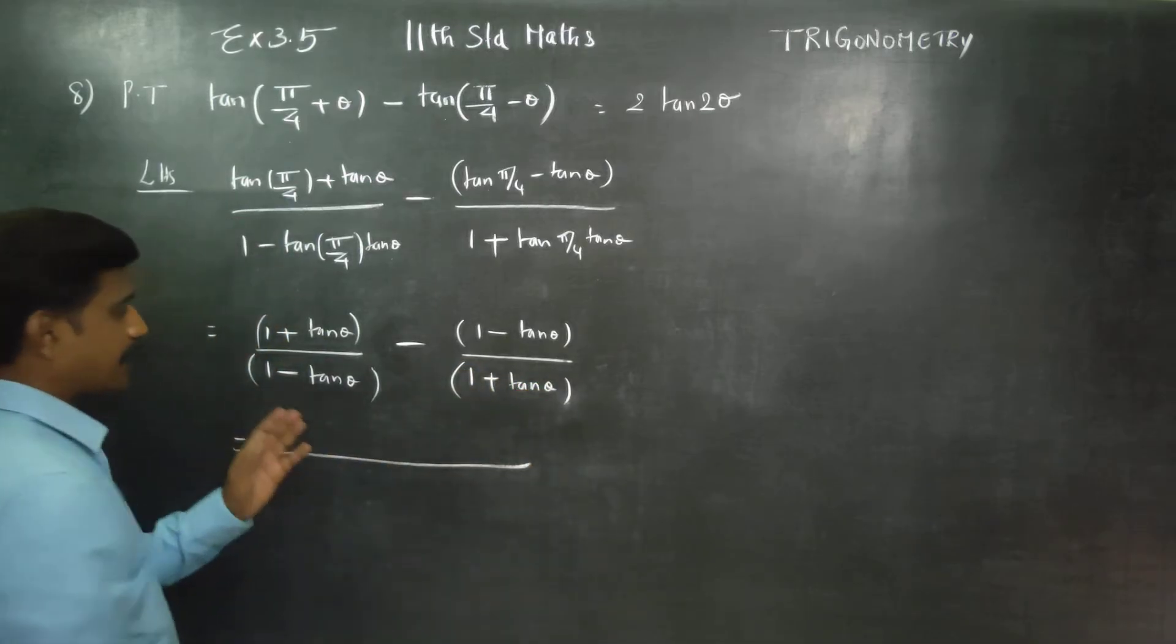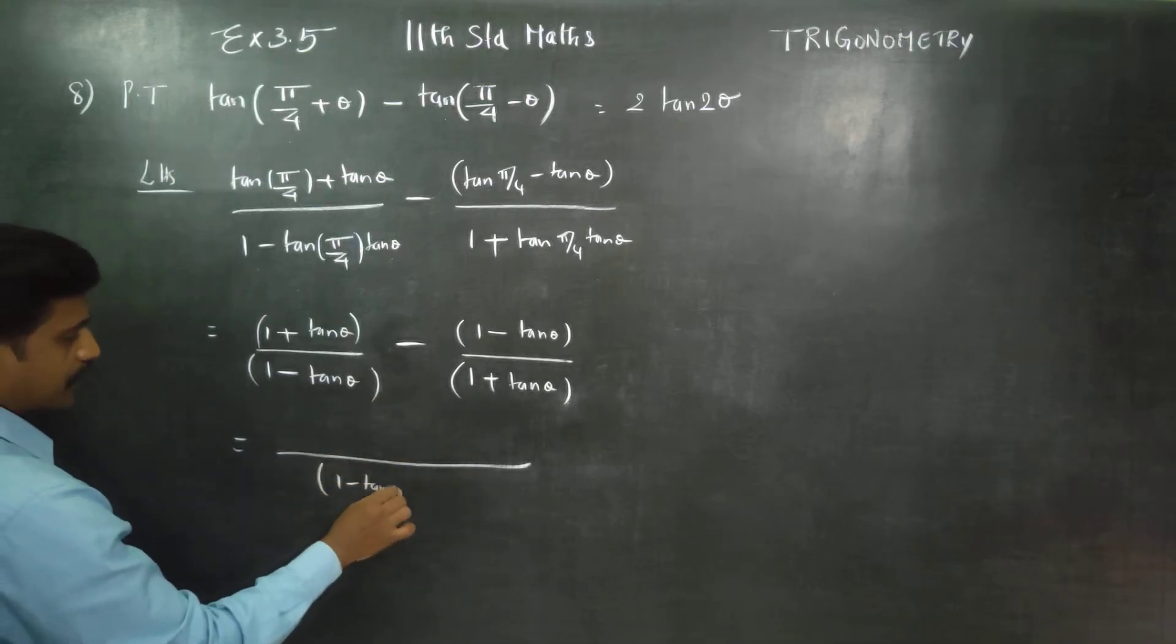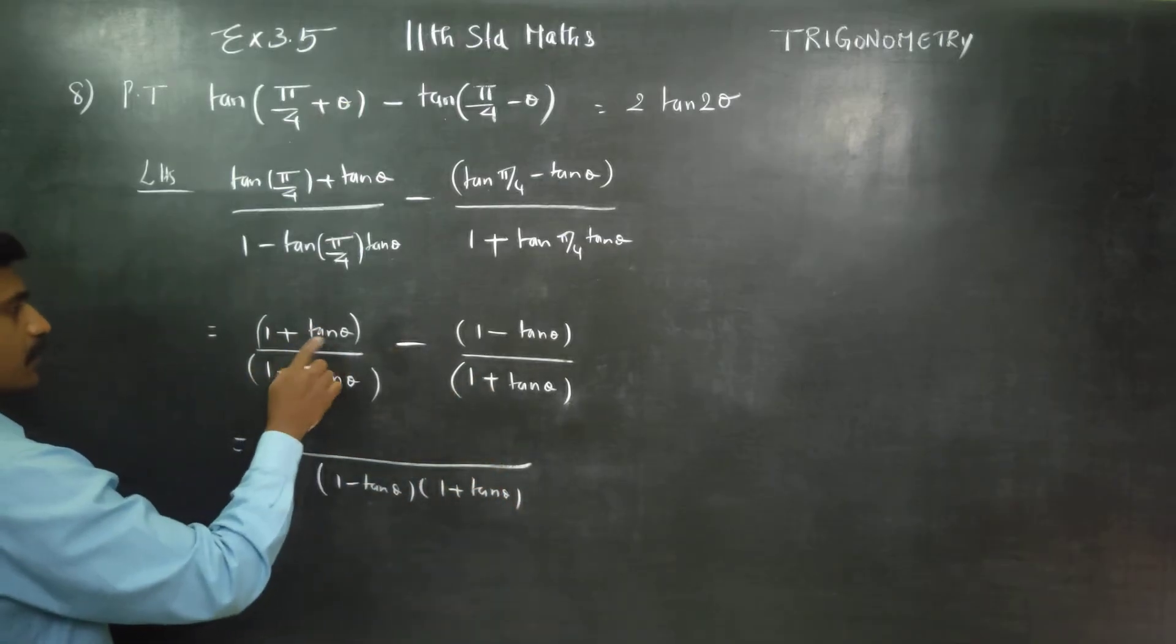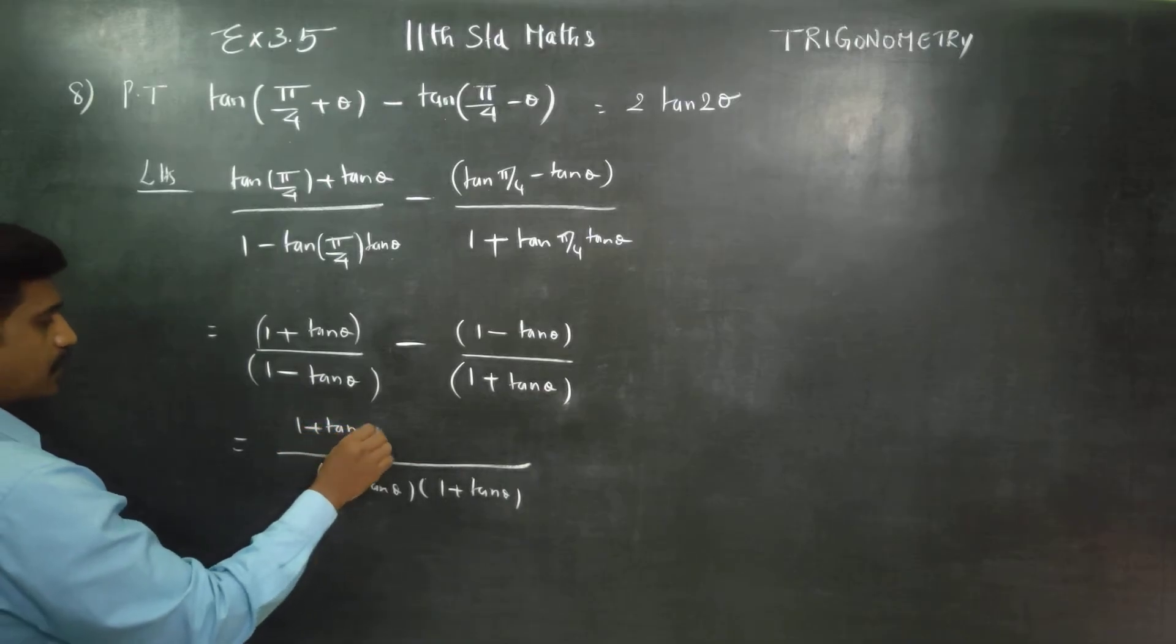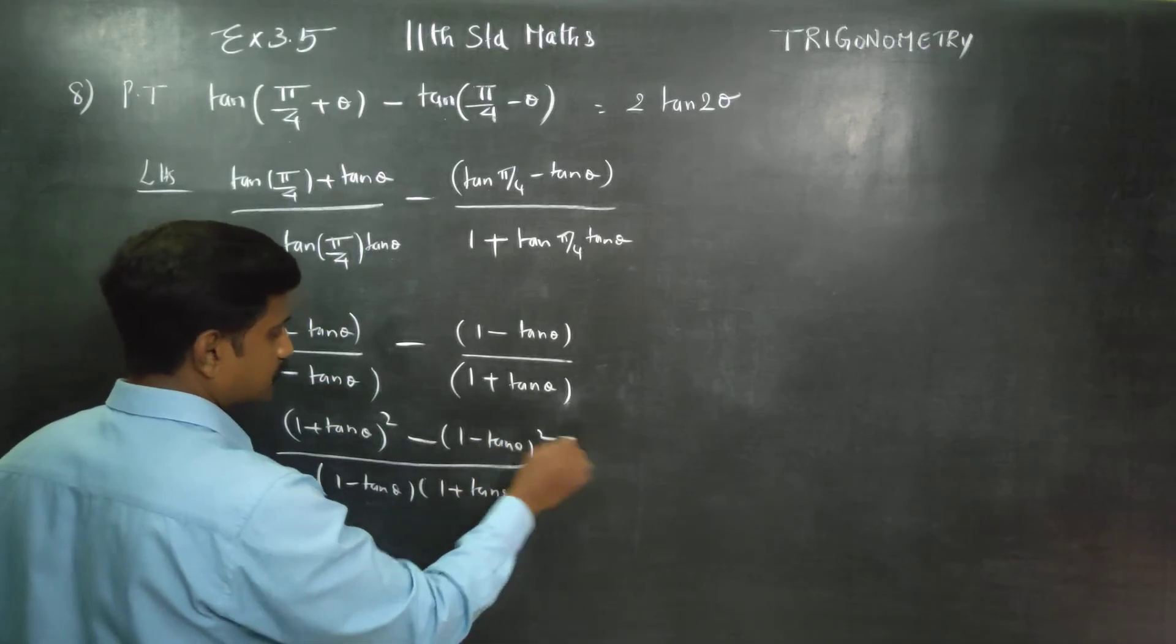I am going to write the formula a minus b into a plus b, LCM. A plus b into a minus b by LCM. And it will cross multiply. 1 plus tan theta, you cross multiply 1 plus tan theta whole square. This will cross multiply 1 minus tan theta whole square.